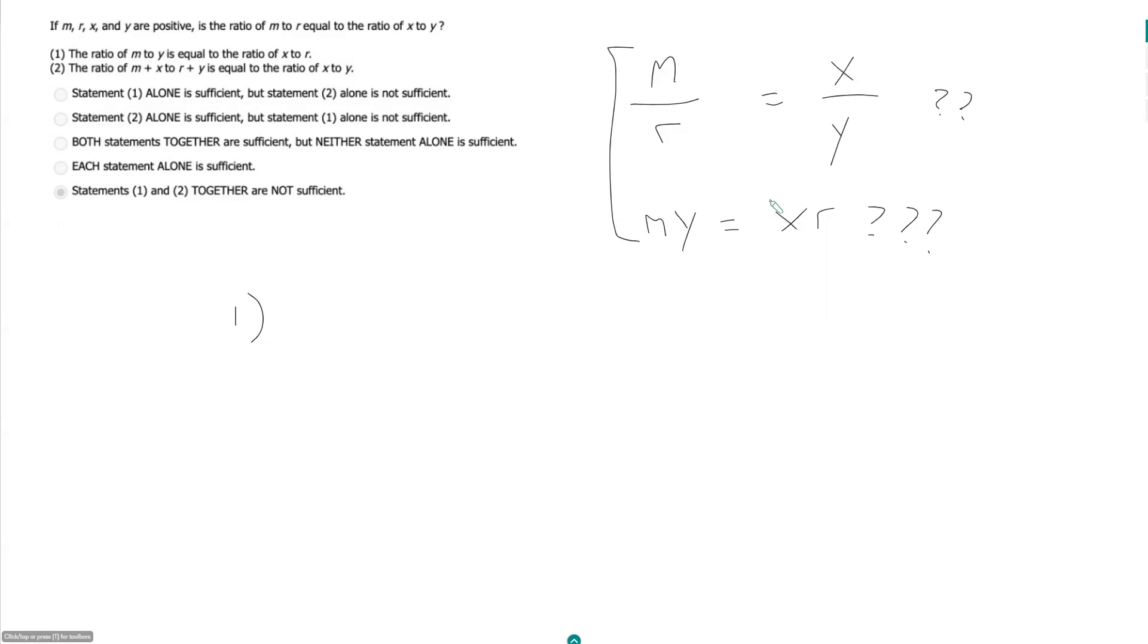Statement one: the ratio of m to y is equal to the ratio of x to r. Can I get either of these things from here? If I were to cross multiply, I would get m times r is equal to x times y.